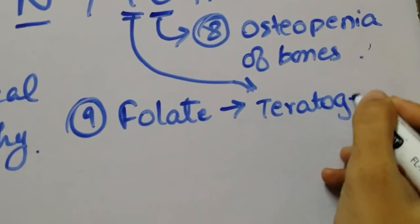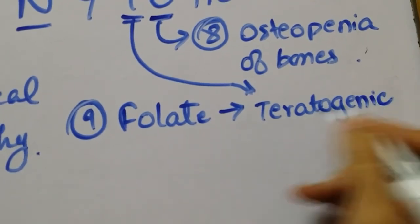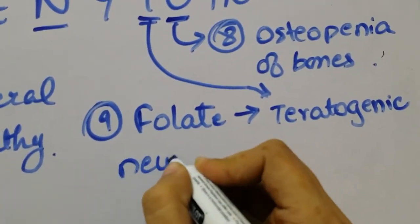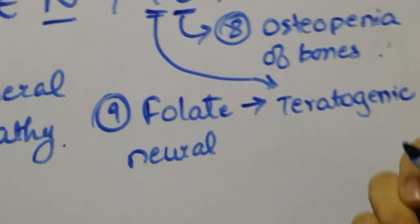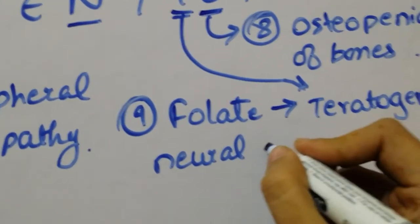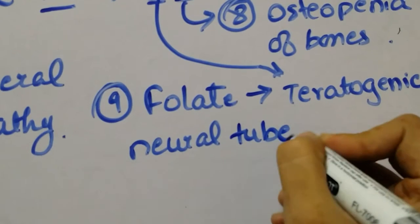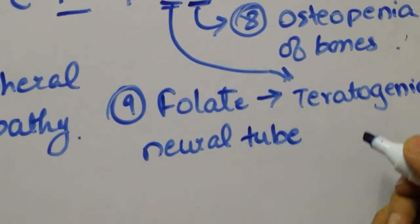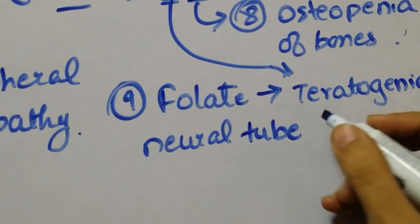Folate deficiency causes neural tube defects, and that's why a lady who wants to get pregnant should not be on phenytoin, because by the time you know you're pregnant, the neural tube is already formed. So you should not be on phenytoin if you're trying to get pregnant.